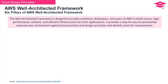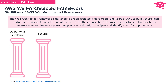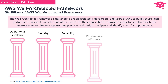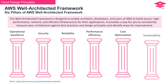The Well-Architected Framework is designed to enable architects, developers, and users of AWS to build secure, high-performance, resilient, and efficient infrastructure for their applications. It provides a way to consistently measure your architecture against best practices and identify areas for improvement. There are six pillars: Operational Excellence, Security, Reliability, Performance Efficiency, Cost Optimization, and Sustainability.